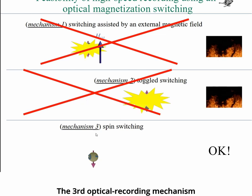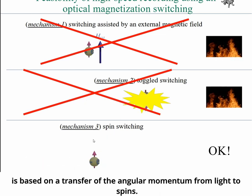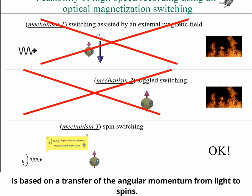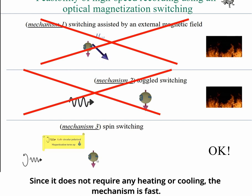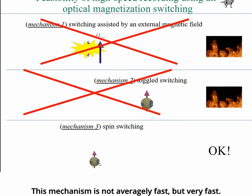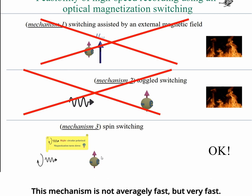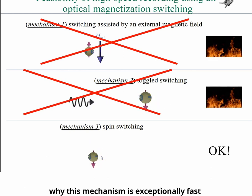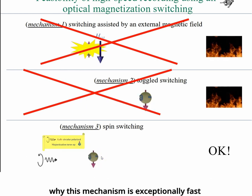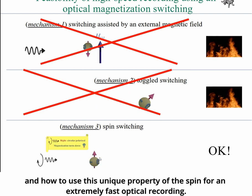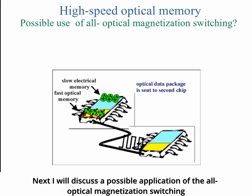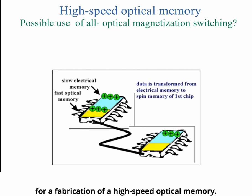The third optical recording mechanism is based on transfer of angular momentum from light to spin. Since it does not require any heating or cooling, the mechanism is fast — not merely averagely fast, but very fast. In the next slides, I will explain why this mechanism is exceptionally fast and how to use this unique property of spin for extremely fast optical recording.